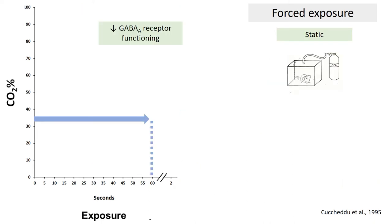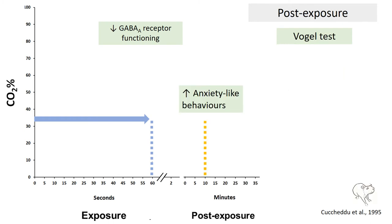Let's remember that forced exposure to static concentrations of CO2 of about 35% reduces GABA receptor functioning, but also increases anxiety-like behaviors in the Vogel test post-exposure. The behavioral response is similar to that of pre-treatment with anxiogenic drugs. Anxiety-like behaviors post-exposure are reduced by benzodiazepines.